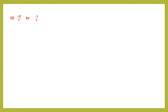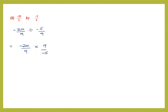Question 2: minus 20 by 9 divided by minus 5 by 9. We write the first rational number as it is — minus 20 by 9. Division changes to multiplication, and we write the reciprocal of minus 5 by 9, which is 9 by minus 5.